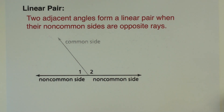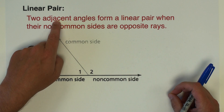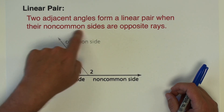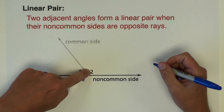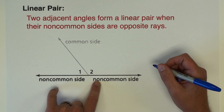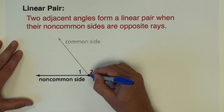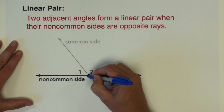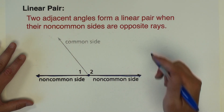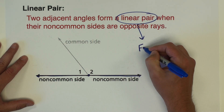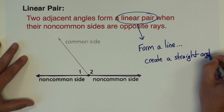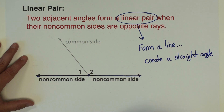Next we have a linear pair. A linear pair of angles are two adjacent angles — the angles have to be right next to each other — where their non-common sides are opposite rays. Here's the common side between these two angles, and this side and this side are the non-common sides, which are simply opposite rays. Another way to think of a linear pair is that they form a straight line — a straight angle. So angles one and two, if they're a linear pair, are going to add to 180.